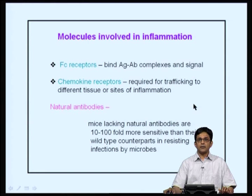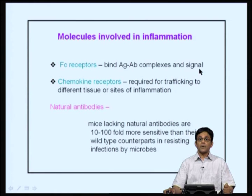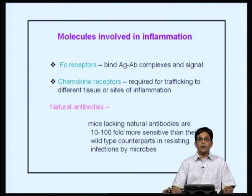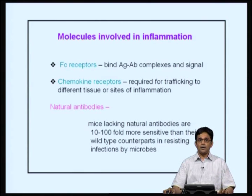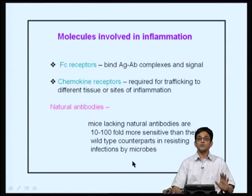Other molecules that are important include Fc receptors, which bind to antigen-antibody complexes and signal — they are particularly important in signaling during allergies. Then there are chemokine receptors, which are required for trafficking to different tissues or sites of inflammation. An important chemokine receptor is CCR5, which is important for entry of HIV. We had also talked about CD5-positive B cells (B-1 cells in mice) present in the peritoneum, which are often responsible for production of natural antibodies in response to different microbial pathogens. Mice lacking natural antibodies are 10 to 100 fold more sensitive than wild-type counterparts in resisting infection, clearly showing that natural antibodies play an important role in innate immunity.